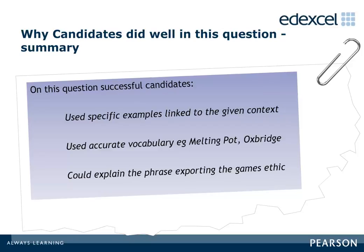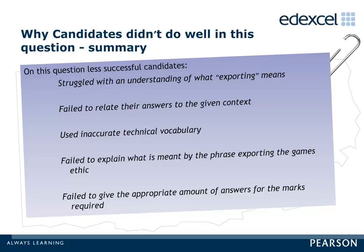On this question, successful candidates used specific examples linked to the given context, used accurate vocabulary such as 'melting pot' and 'Oxbridge,' and could explain the phrase 'exporting the games ethic.' Less successful candidates struggled with an understanding of what 'exporting' means, failed to relate their answers to the given context, used inaccurate technical vocabulary, and failed to give the appropriate amount of answers for the marks required.